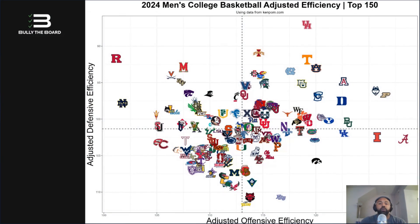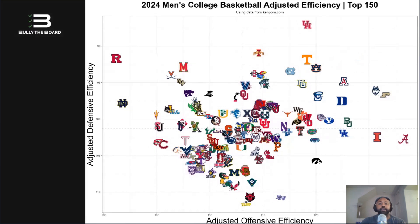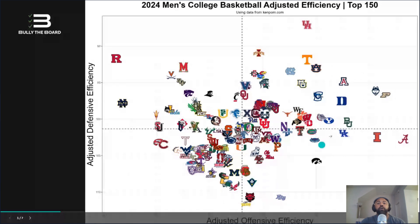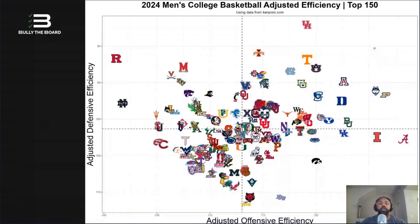I want to start by giving you some background on how we run things here. You're going to see this sort of matchup map, or efficiency landscape as we call it. To orient you, there are four quadrants. The top right quadrant contains teams that are good on offense and defense. On the x-axis you have adjusted offensive efficiency — how many points per possession are these teams scoring. On the y-axis you have adjusted defensive efficiency, meaning how many points these teams are giving up per possession.